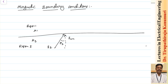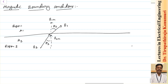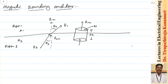B1 is tilted with respect to the normal component, making an angle theta one. I want to find theta one, theta two, and the magnitude of B1 and its components. To get the normal components, we apply Gauss's law for magnetostatics. For that we take a surface with height delta H and surface area delta S. As delta H approaches zero, we can calculate the normal components.